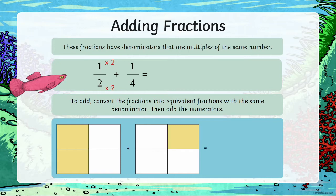One times two is two, which leaves us with two fourths or quarters plus one quarter. Now that our fractions are all showing quarters, we can add them together easily to find out how many quarters we have.